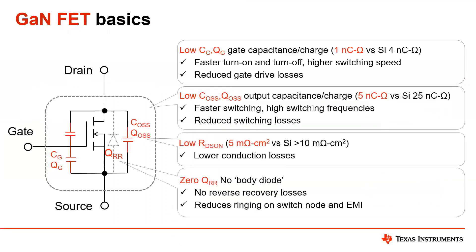Looking at GAN FET basics, GAN is fundamentally a better power FET, especially a high voltage power FET, than a silicon solution. First and foremost, GAN has about 25% of the gate capacitance of a standard silicon solution. That means faster turn on and turn off, higher switching speeds, and a reduced amount of gate loss per switching cycle.